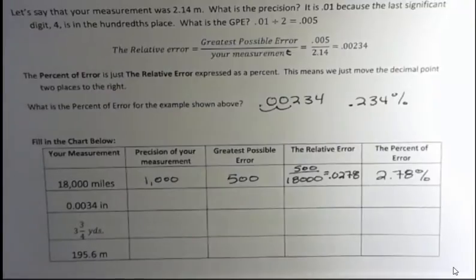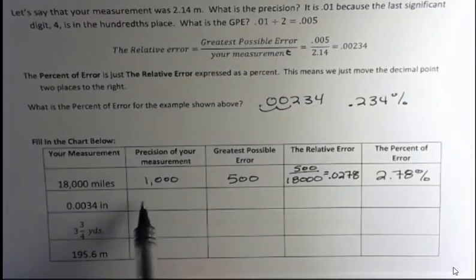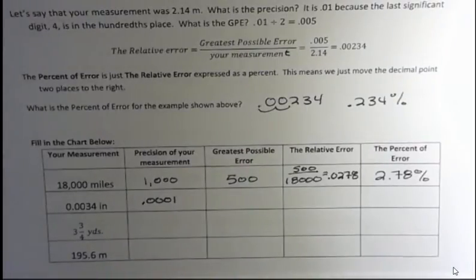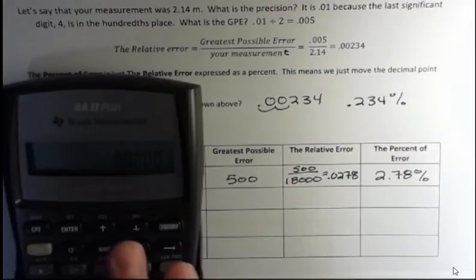So you should try these other ones on your own and see how you do and then you could come back and check. So we have the precision of our measurement to four places out, the ten thousands place. So what's the greatest possible error? You're going to add a zero and make that five, but we can do it on a calculator. You'll start to see whenever you're dividing something like this - there was four zeros and a one.